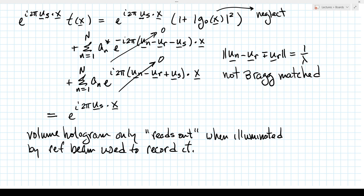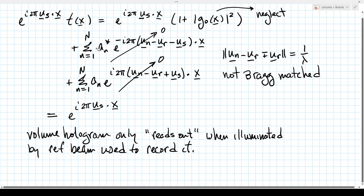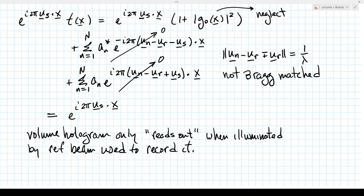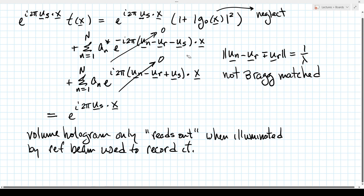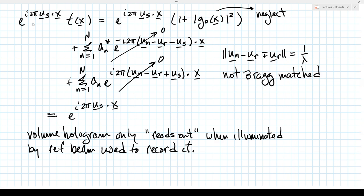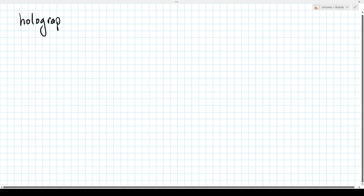The volume hologram is very selective — it only responds and reads out if illuminated by the original reference beam used to record it. Use a different reference beam, a different plane wave, and it doesn't read out anything. That starts to sound like a memory device: we could record a particular object field with a particular reference beam, then recall that object field by illuminating with that reference beam, do a double exposure recording a different object field with a different reference beam, and recall either one independently.